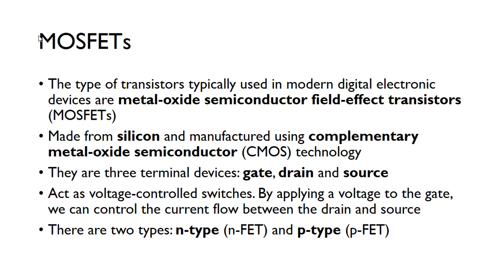The type of transistors typically used in digital circuits are called MOSFETs — metal oxide semiconductor field effect transistors. These are made from silicon and manufactured using what we call CMOS technology — complementary metal oxide semiconductor technology. A MOSFET has three terminals: the gate, the drain, and the source. These are voltage-controlled switches — we apply a voltage to the gate, which then controls the current flow between the drain and the source.